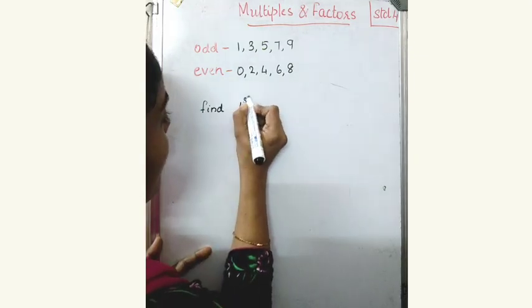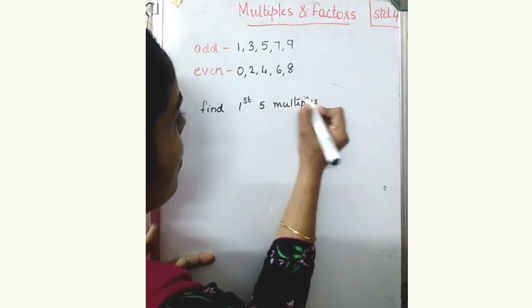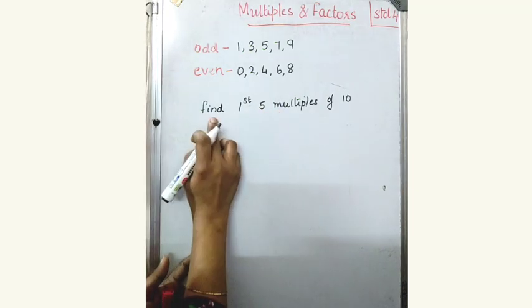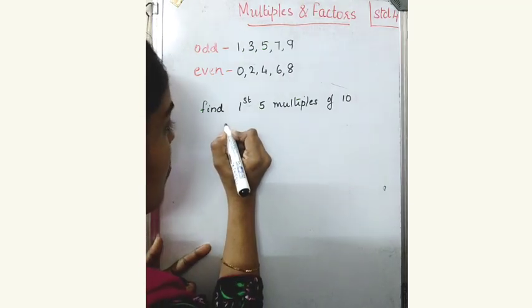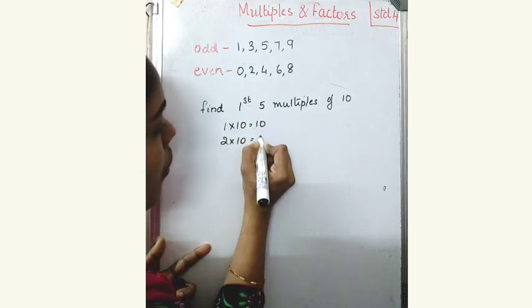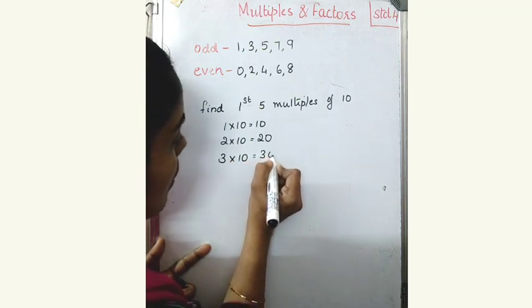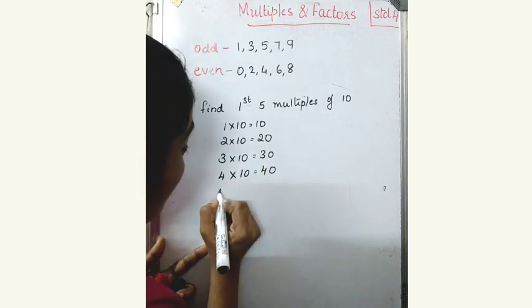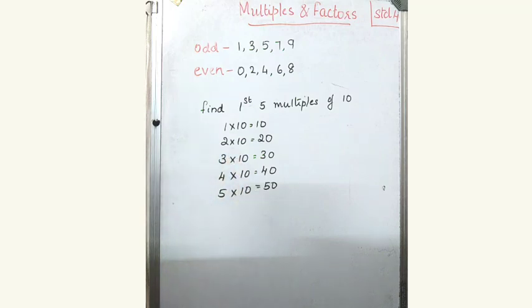Find the first 5 multiples of 10. How will you find out? 1st multiple: 1 into 10 equal to 10. 2nd multiple: 2 into 10 equal to 20. 3rd multiple: 3 into 10 equal to 30. 4th multiple: 4 into 10 equal to 40. 5th multiple: 5 into 10 equal to 50. This is the way to find the multiples.